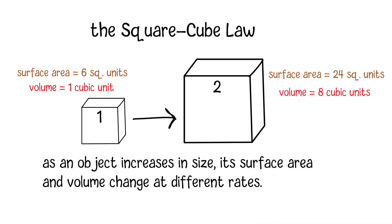You can see that while the small cube's surface area and volume are in a balanced ratio, the larger cube's surface area has increased fourfold, but its volume has increased eightfold. This demonstrates the essence of the square cube law, where volume increases faster than surface area as an object grows in size.